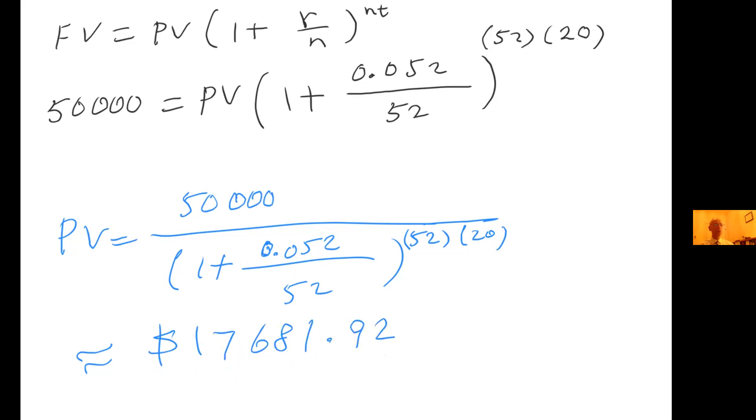As you can see, the more you wait, the less money you have to deposit in the beginning. Let's say theoretically, if you have 50 years to wait, what would happen if you change this t to 50? Now the answer would be only $3,718.51. Let me know if you have any questions. Thanks.